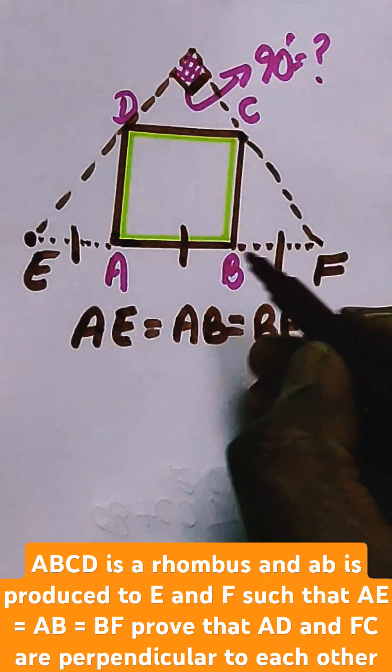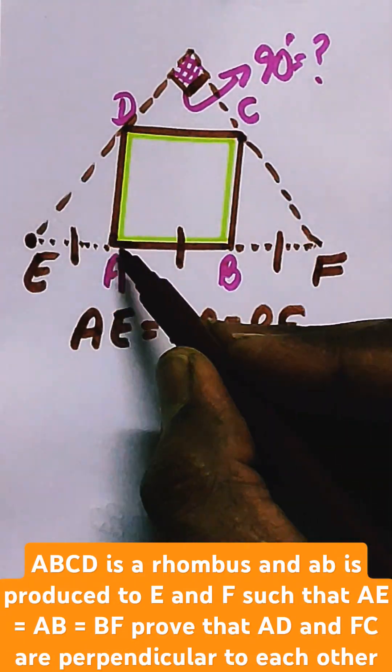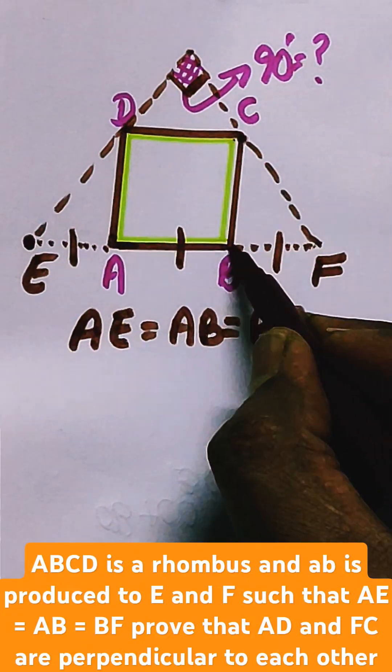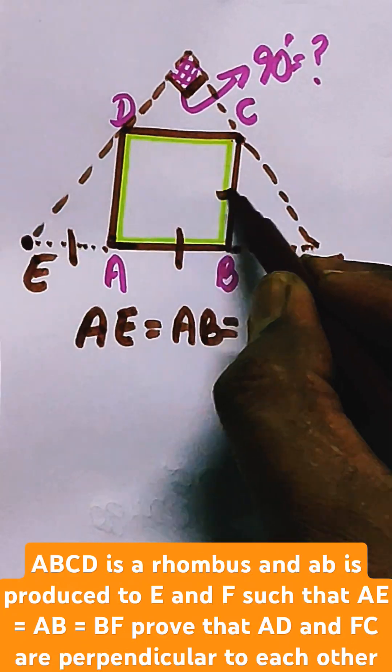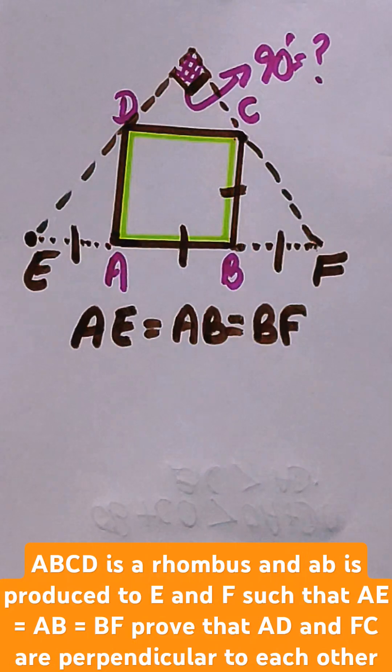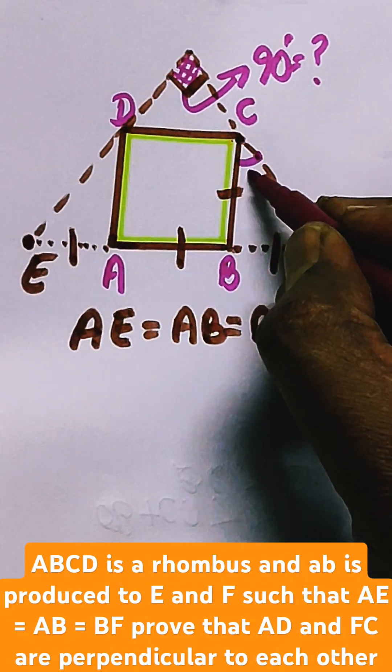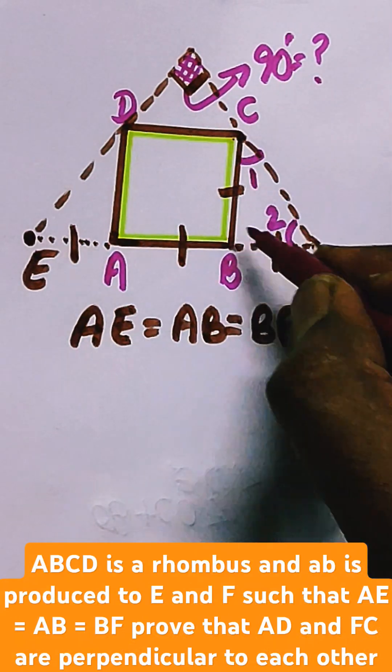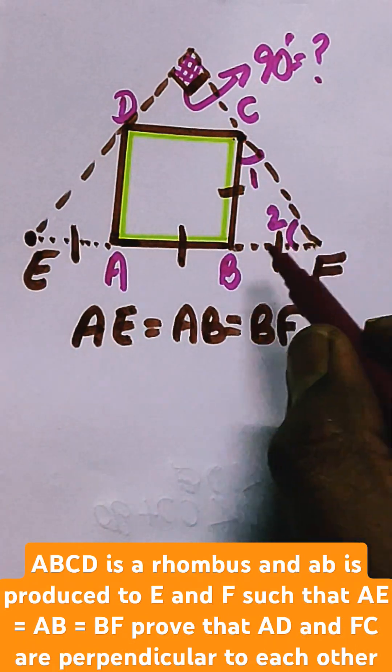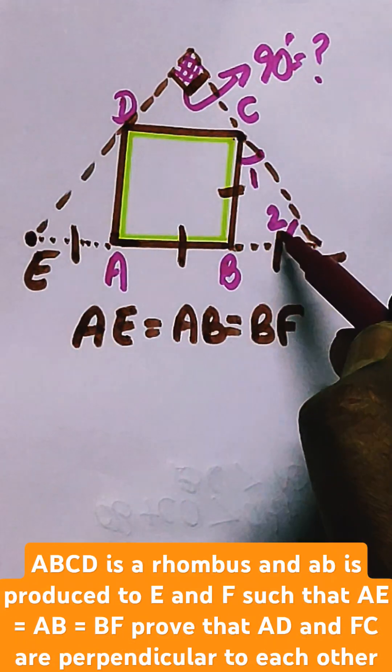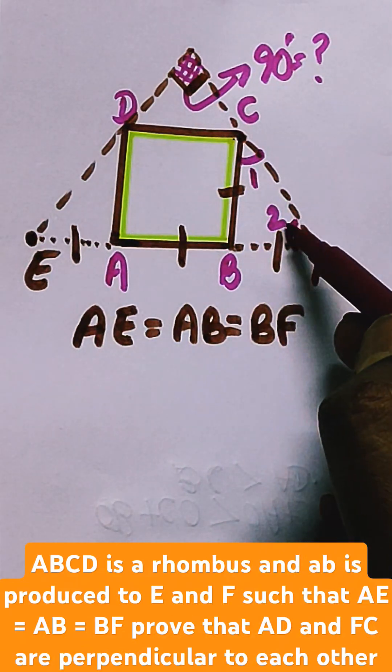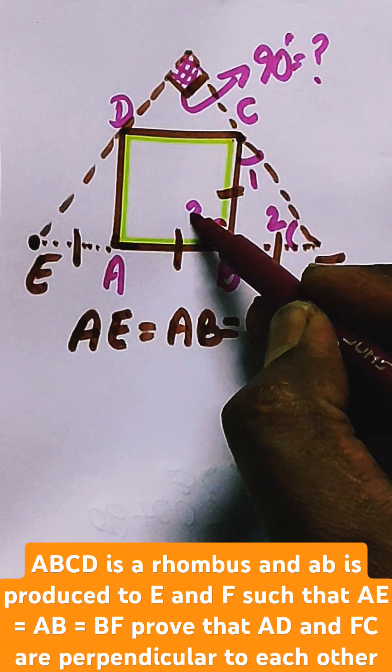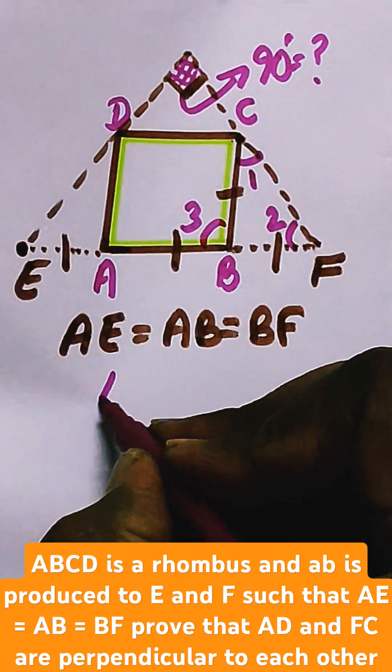Now since AB is equal to BF and AB is equal to BC also being a rhombus, then we can say that BF equals BC. So in this triangle, angle 1 is equal to angle 2 because BC is equal to BF, and the angles opposite to the equal sides are always equal.